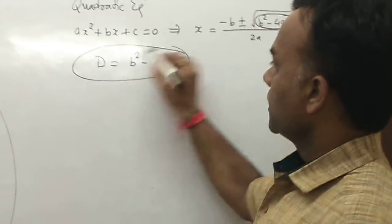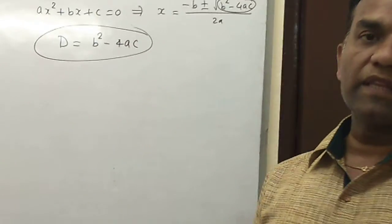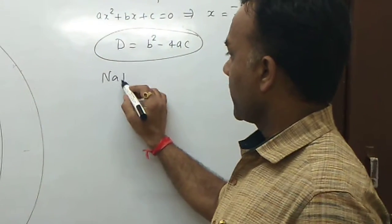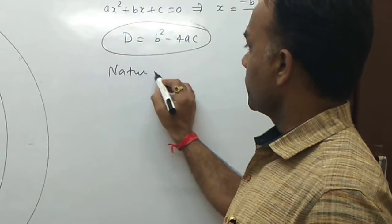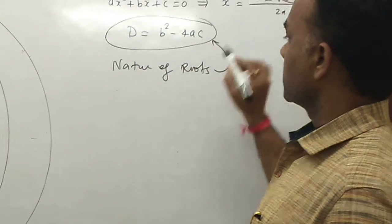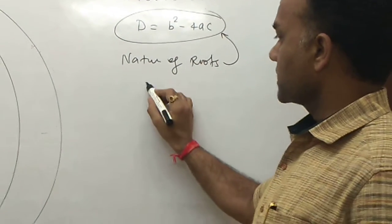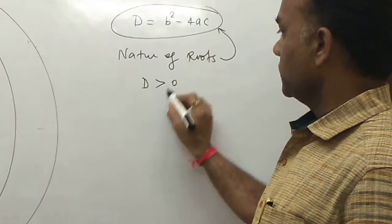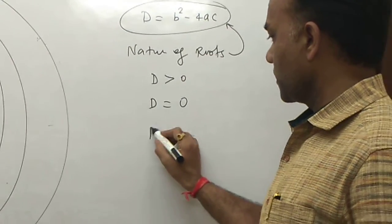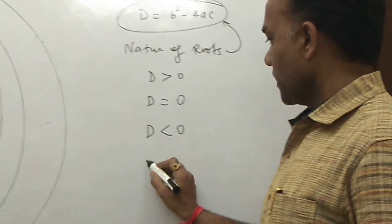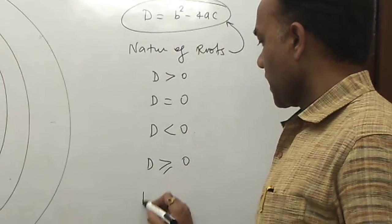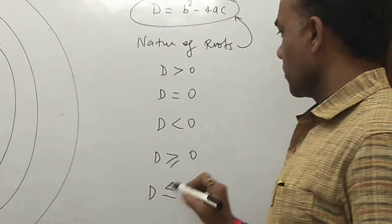Now we define the nature of roots using the discriminant. If D > 0, roots are real and distinct. If D = 0, roots are real and equal. If D < 0, roots are imaginary. These conditions cover D ≥ 0 and D < 0 for all cases of the quadratic equation.